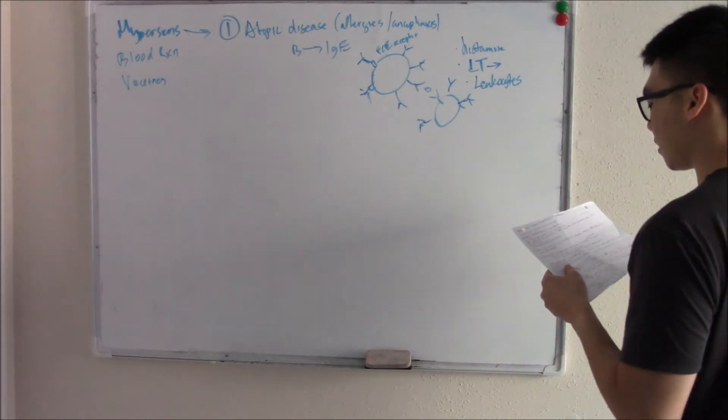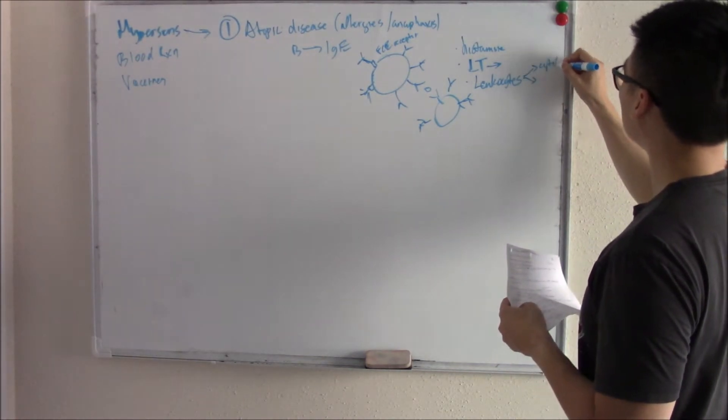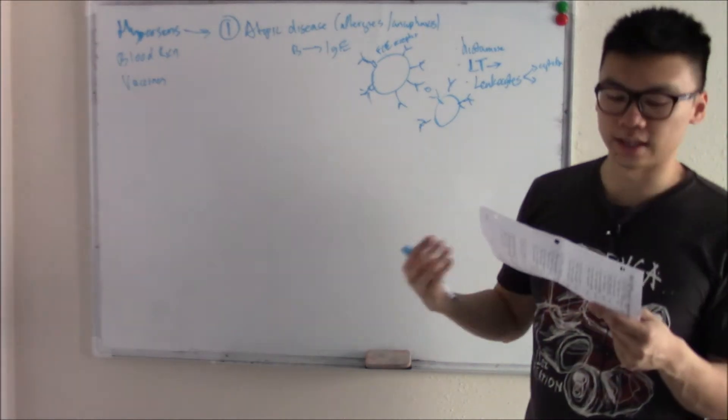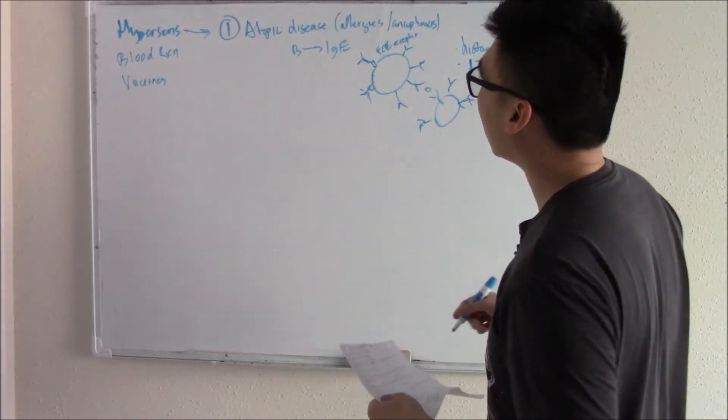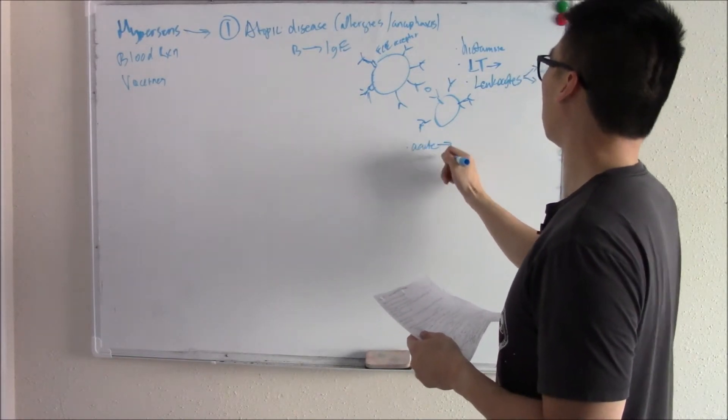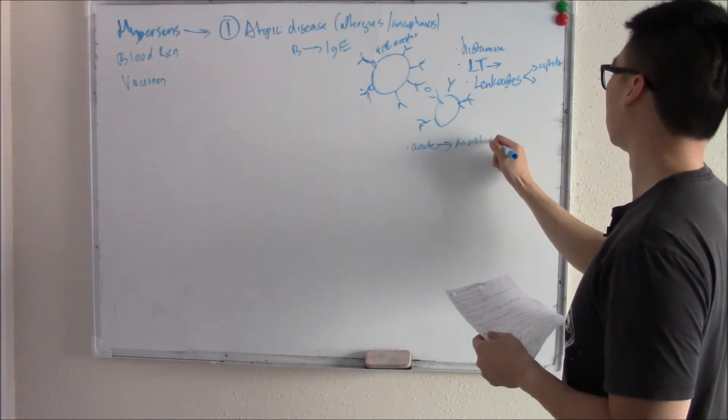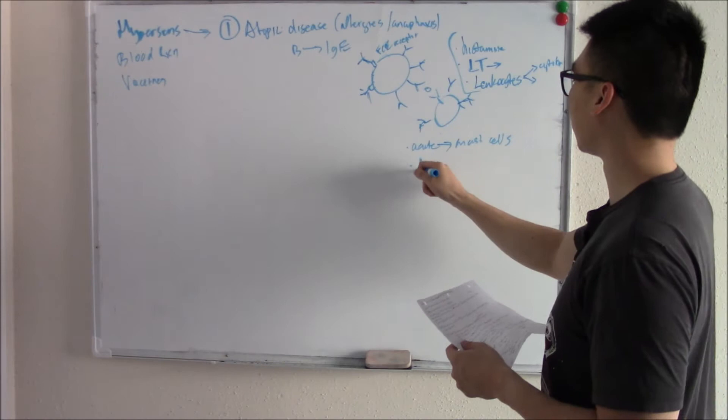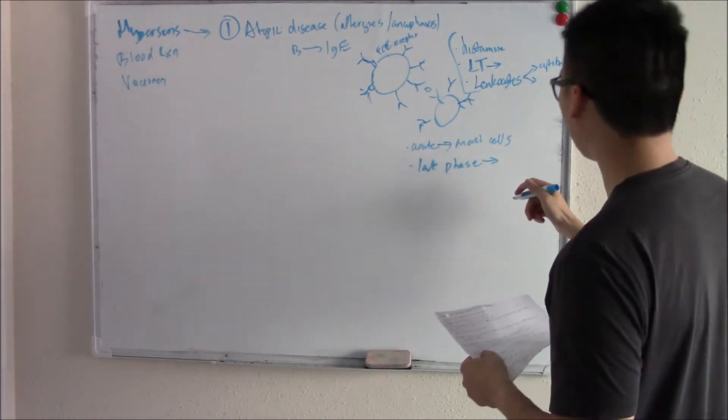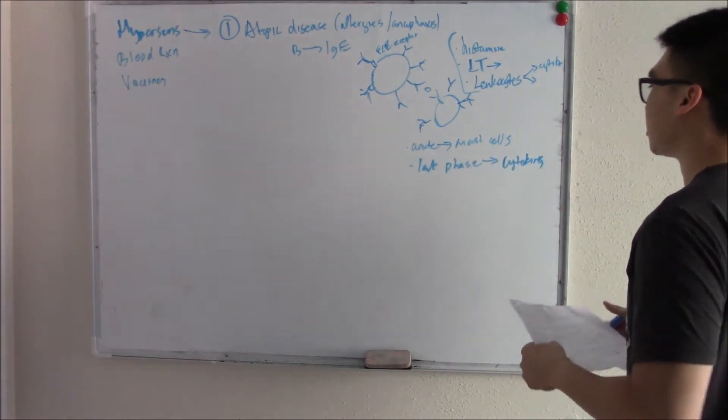Leukotrienes in particular cause a ton of things including smooth muscle contractions, so you can get that tightness on your chest when you see allergic reactions. And leukotrienes also attract chemotactically leukocytes. Your leukocytes can release cytokines, cause tissue damage, just make things worse.